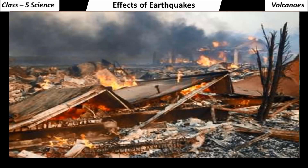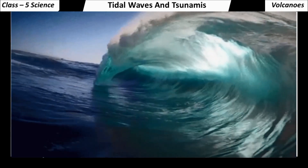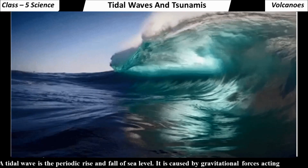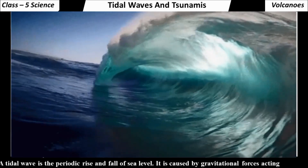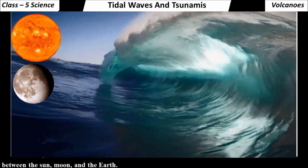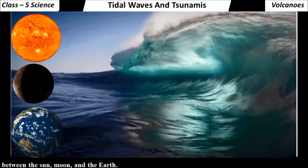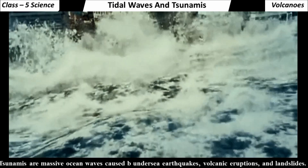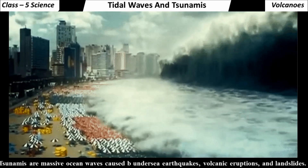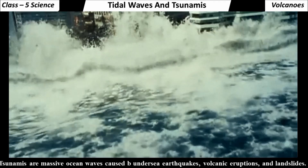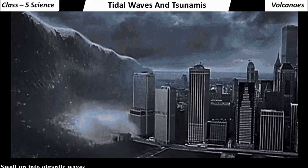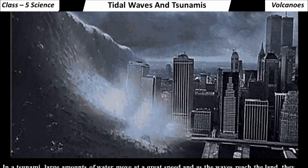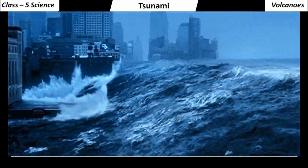A tidal wave is the periodic rise and fall of sea level. It is caused by gravitational forces acting between the sun, moon and the earth. Tsunamis are massive ocean waves caused by undersea earthquakes, volcanic eruptions and landslides. In a tsunami, large amounts of water move at great speed, and as the waves reach the land they swell up into gigantic waves. Tsunami is a Japanese word meaning harbor wave.